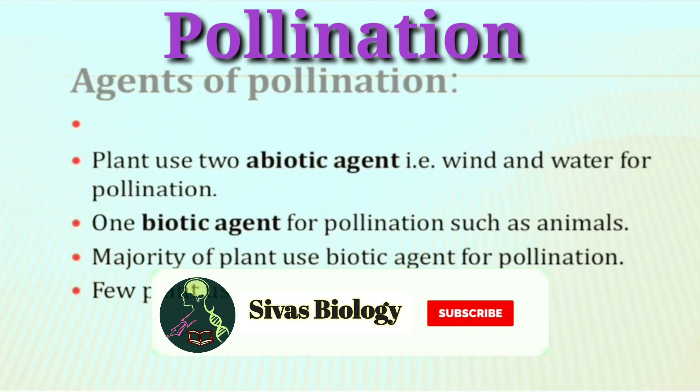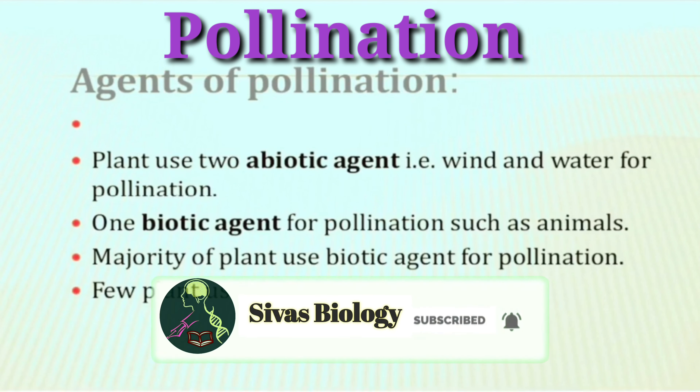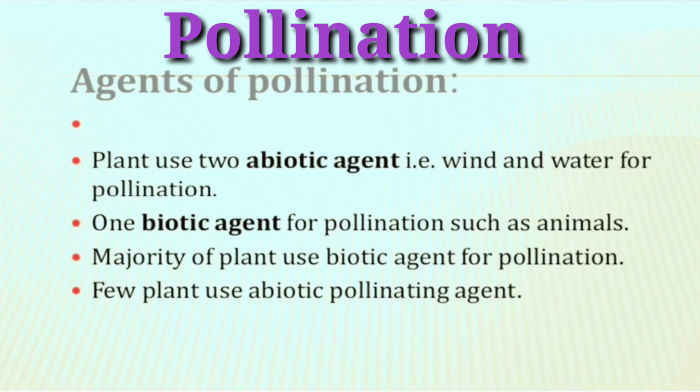Pollination can be classified into two types. One is self-pollination and another one is cross-pollination.